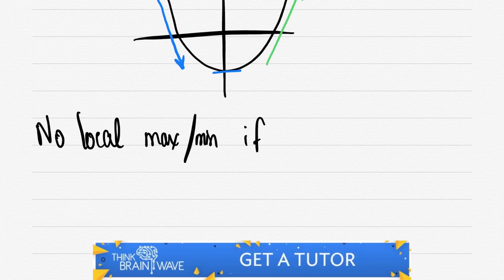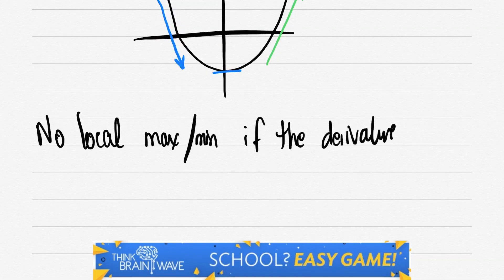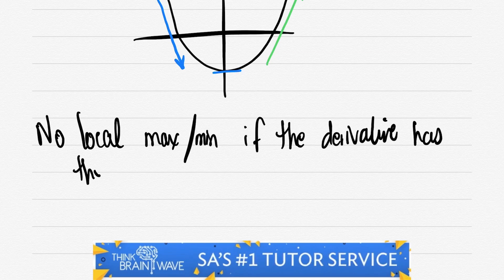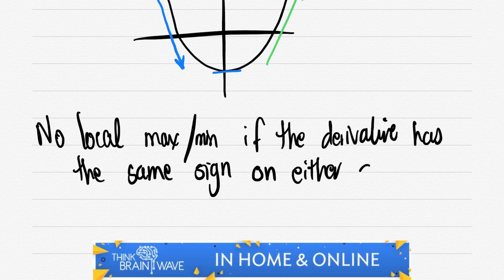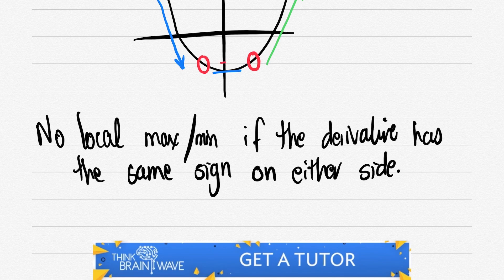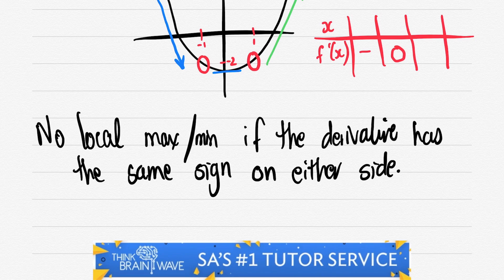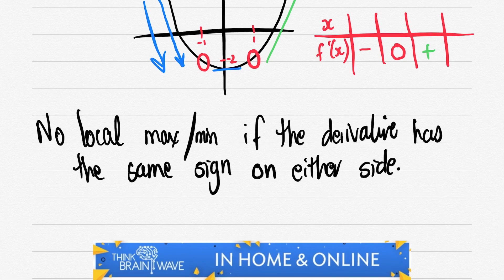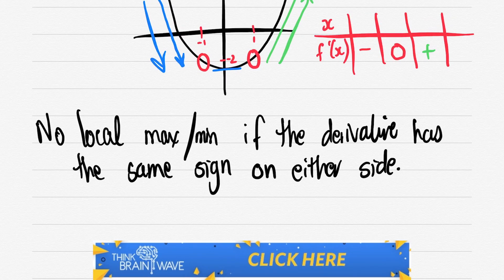There's no local maximum or minimum if the derivative on either side is the same. So if it's positive on the left and positive on the right, there's no local max or local minimum. If we look at two points left and right and draw a function, the derivative on the left hand side would be negative and the derivative on the right would be positive — or it might be positive and positive.